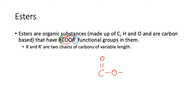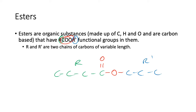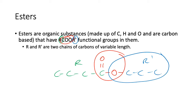On one side you've got the R group, and on the other side you've got the R' group, which does actually also include that carbon there. So that's what it means by the R and the R' — they can be of variable length. It's going to be important for you to identify which one is the R and which one is the R' group. Whichever group is bonded to the single bonded O is the R' group, and whichever one is bonded to the carbon with the double bond is the R group. That distinction will be important later on.